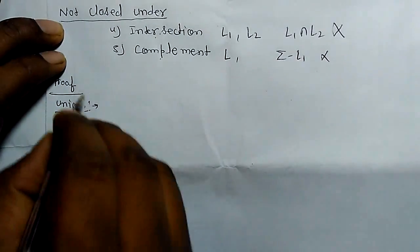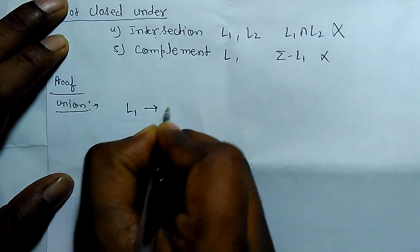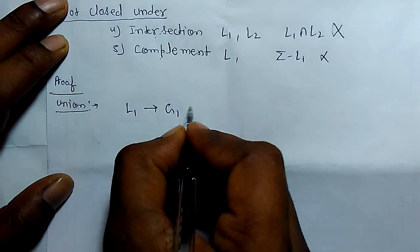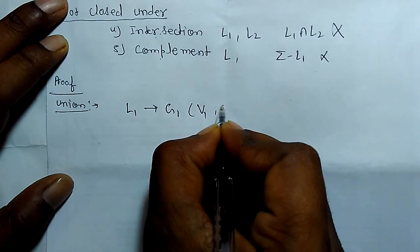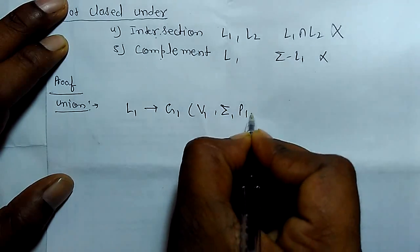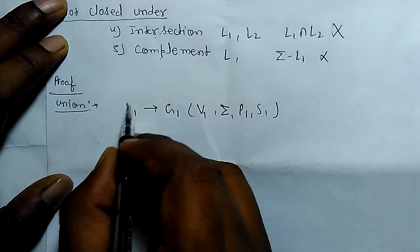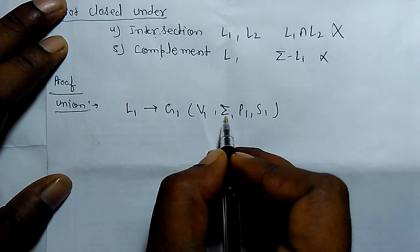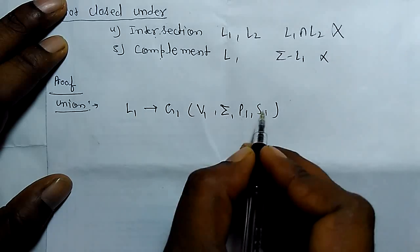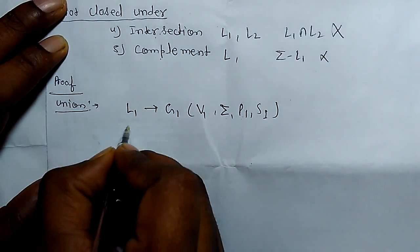Let's take a proof for union. If there is a language L1 with an equivalent grammar G1, then G1 has variables V1, input symbols sigma, production rules P1, and start symbol S1. V1 is the set of variables used in G1 that generates language L1. Sigma is the set of input symbols, P1 is the production rule set for L1, and S1 is the start symbol for L1.